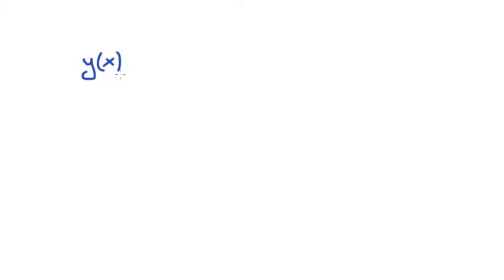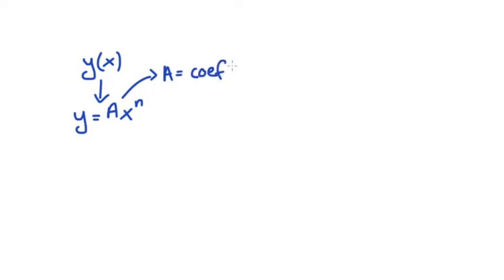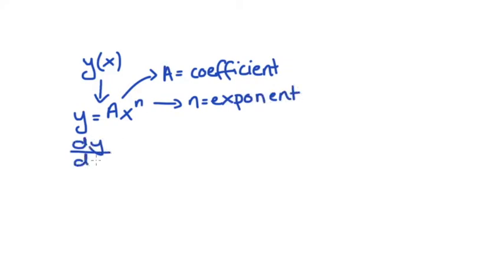So the big rule to note is this one here. Let's say we have some function such that y is a function of the variable x. If the functional form is such that y is equal to a times x to the power of n, where a is just a coefficient on the variable x and n is an exponent, then the derivative of the function — which I will notate dy/dx — is equal to: we bring the exponent out the front, so n times a times x to the power of n minus one.